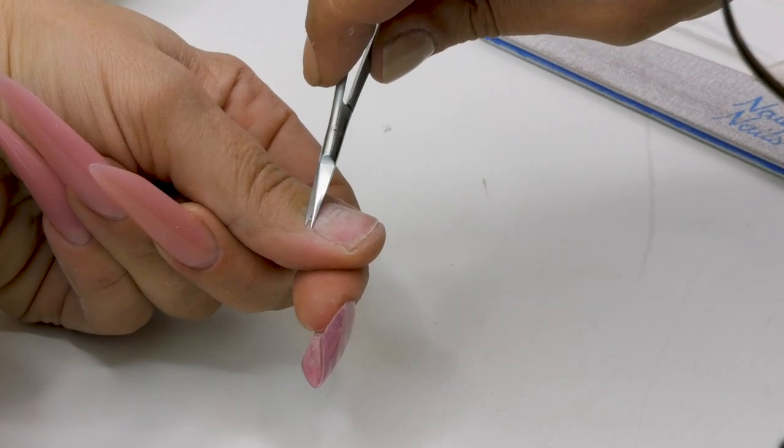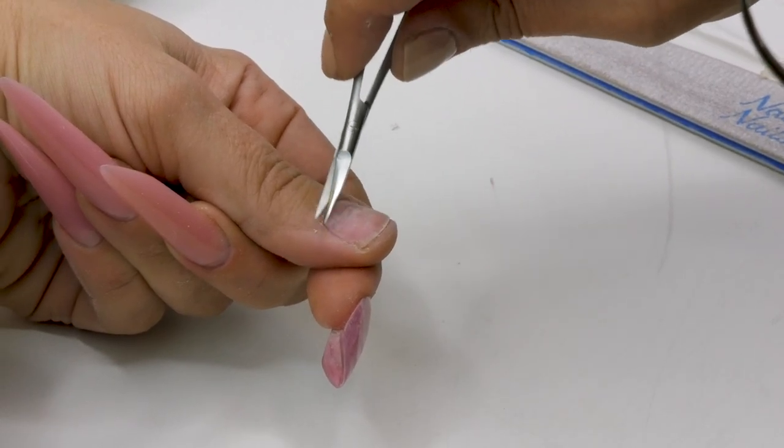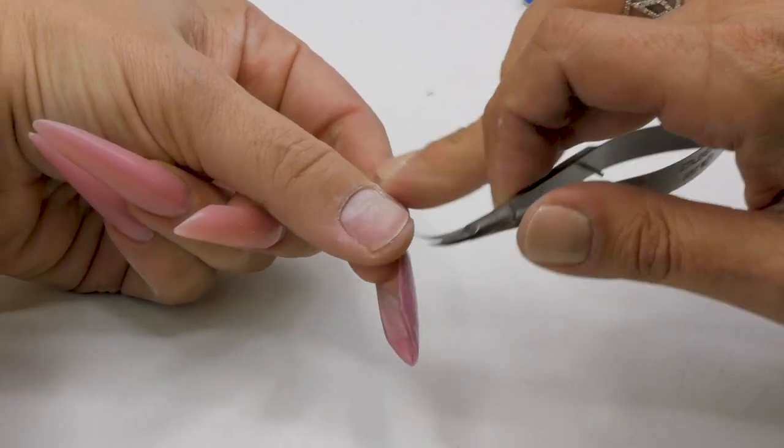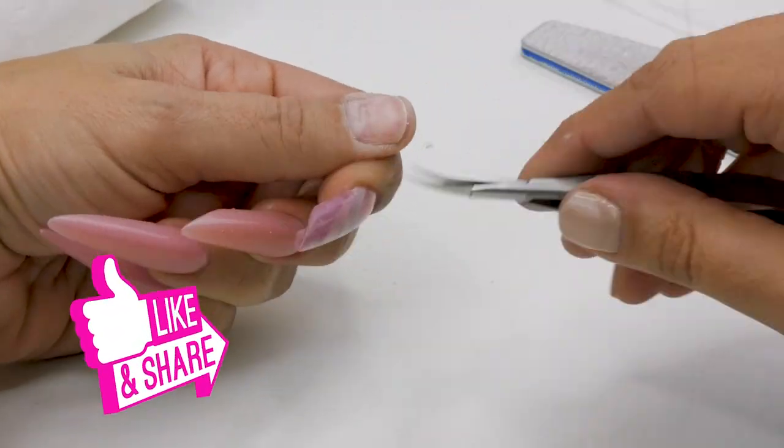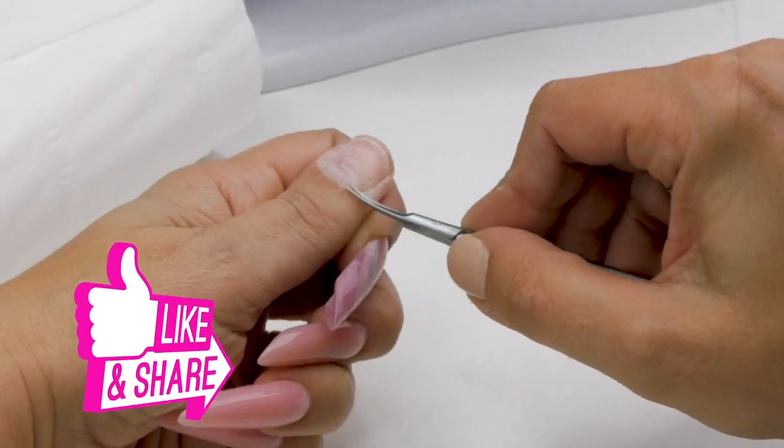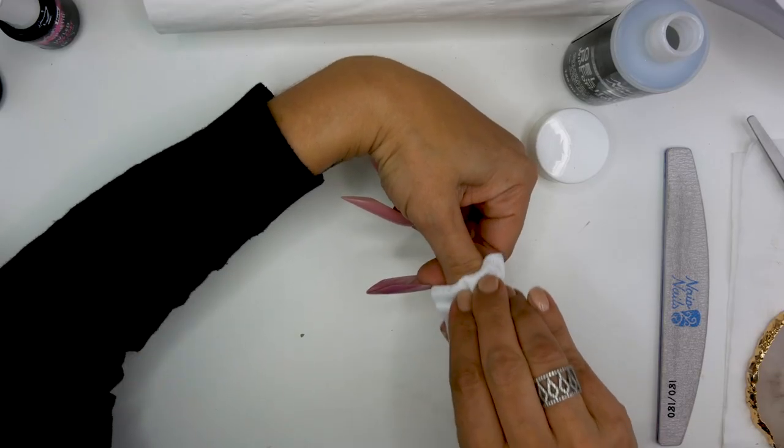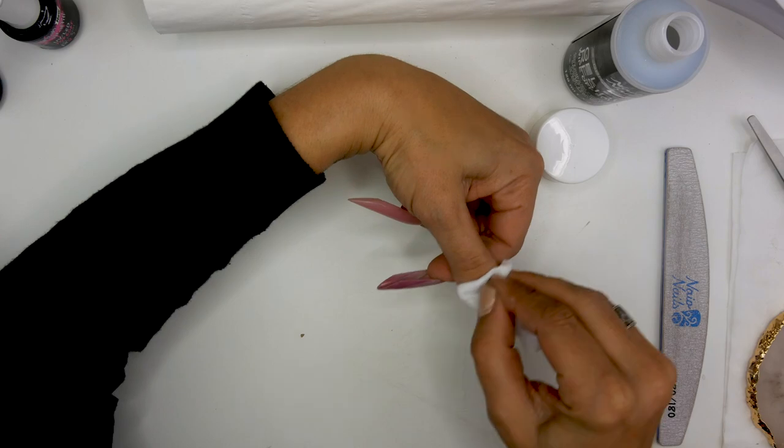I'm going to cut the dead skin and only the dead skin. When it's white, that means it's not going to be attached anymore, so you can gently cut. And I'm going to wipe with some gel residue wipe off solution.